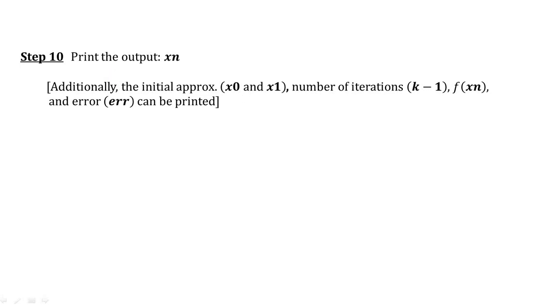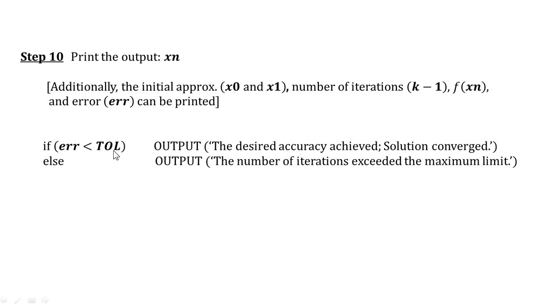Finally we can print the output xn. Additionally we can print x0, x1, the two initial approximations, the total number of iterations which is equal to k minus 1 at this stage, and function value at the latest iteration and error as well. If error is less than tolerance at this stage we can display a message that the desired accuracy achieved, solution converged. Else we can display the message the number of iterations exceeded the maximum limit.